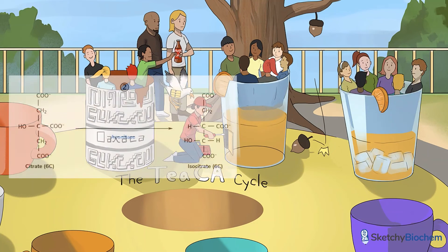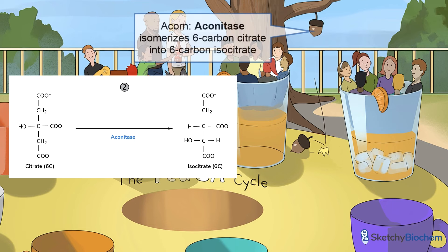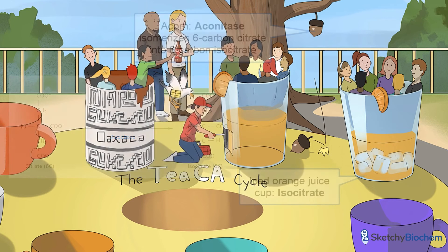You'll see a large acorn tree right behind the group of riders sitting in the OJ cup. An acorn has fallen just between these riders and our next group sitting in iced OJ. Aconitase isomerizes 6-carbon citrate to 6-carbon isocitrate, which is represented by iced OJ.